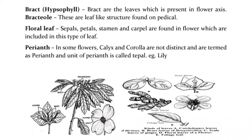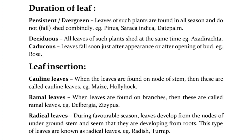Perianth — in some flowers, calyx and corolla are not distinct and are termed as perianth; the unit of perianth is called a tepal, e.g., lily. Duration of leaf: Persistent (evergreen) — leaves of such plants are found in all seasons and do not shed commonly, e.g., Pinus, Saraca indica, date palm. Deciduous — all leaves of such plants shed at the same time, e.g., Azadirachta. Caducous — leaves fall soon just after appearance or after opening the bud, e.g., rose.